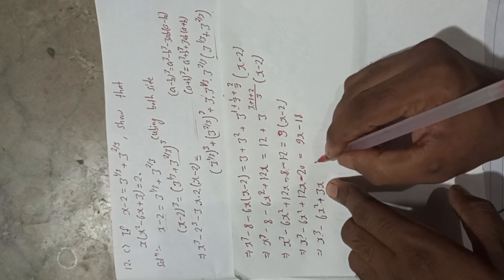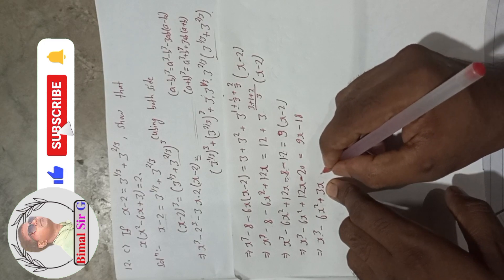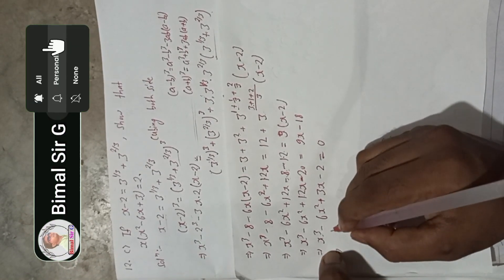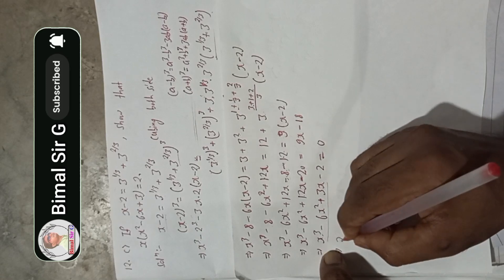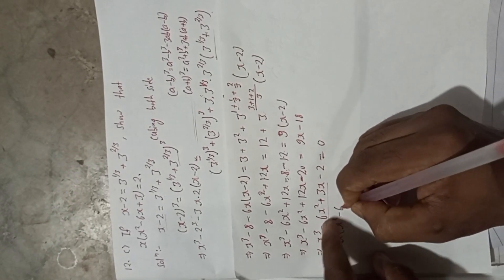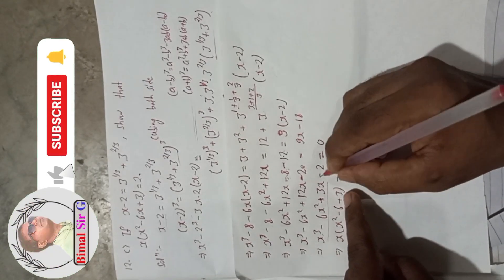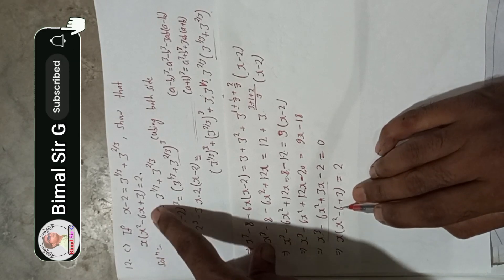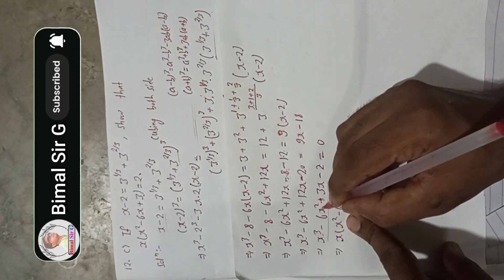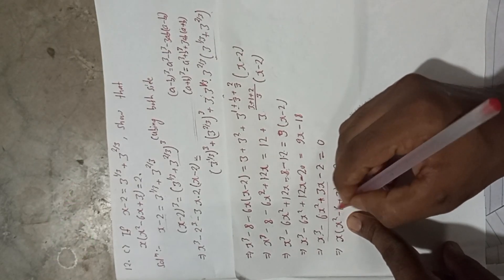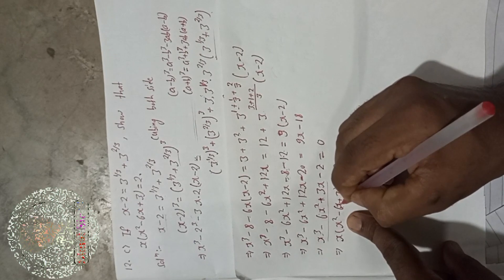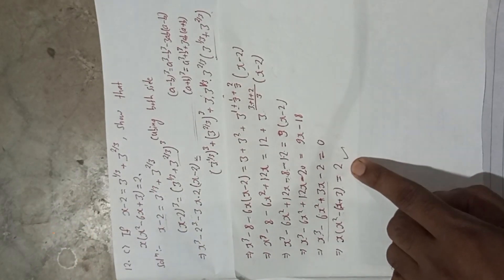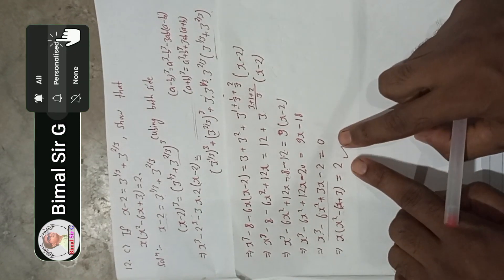So we have x³ minus 6x² plus 3x minus 2 equals 0. Taking x as common factor: x(x² minus 6x plus 3) minus 2 equals 0, which gives x(x² minus 6x + 3) equals 2. This is our required solution. Hope you understand this problem.